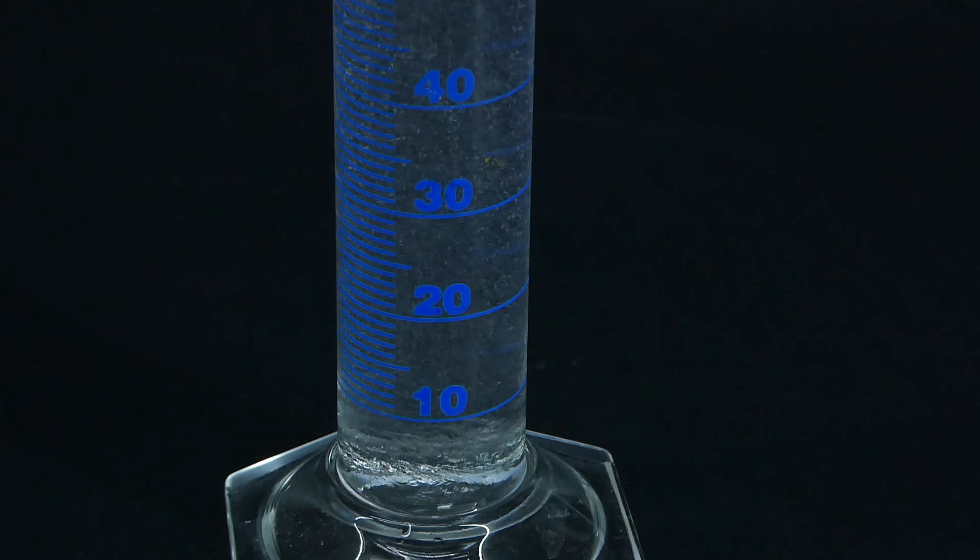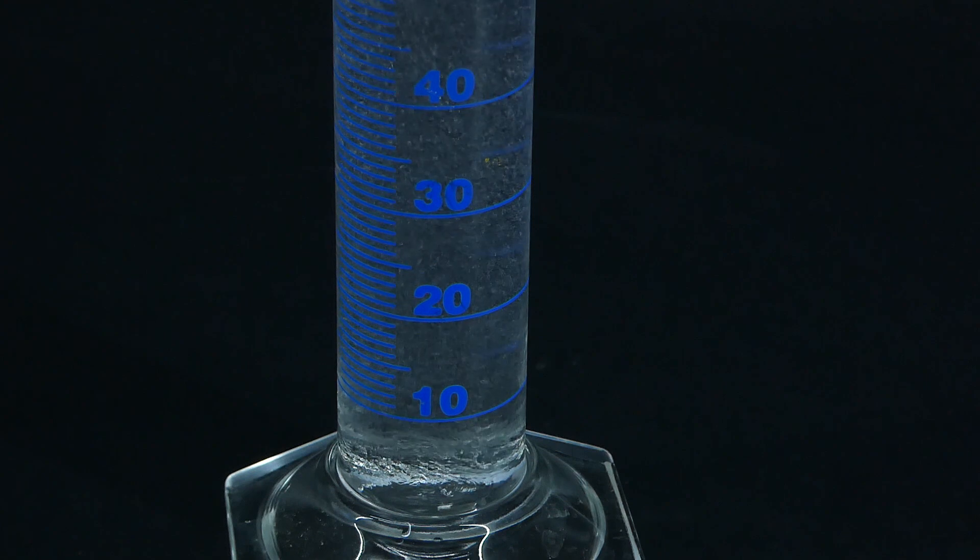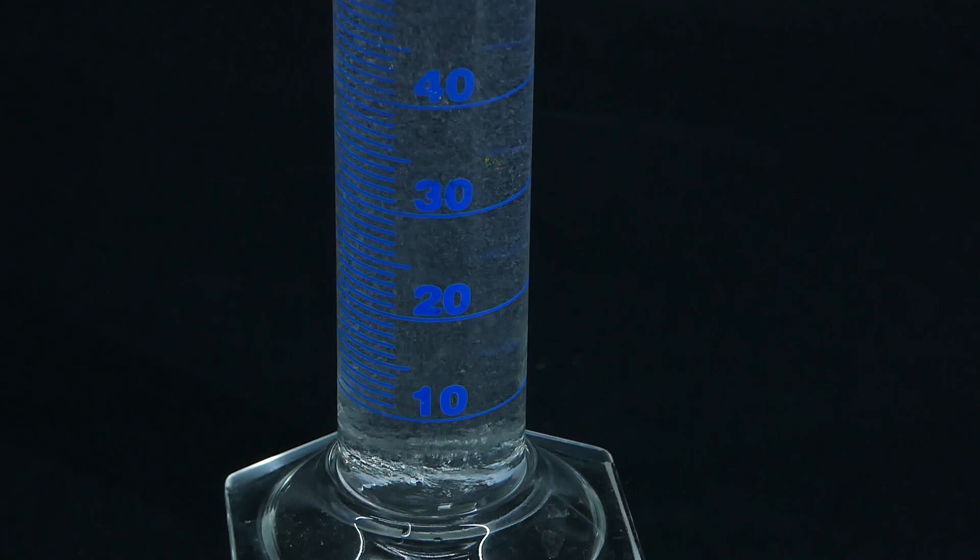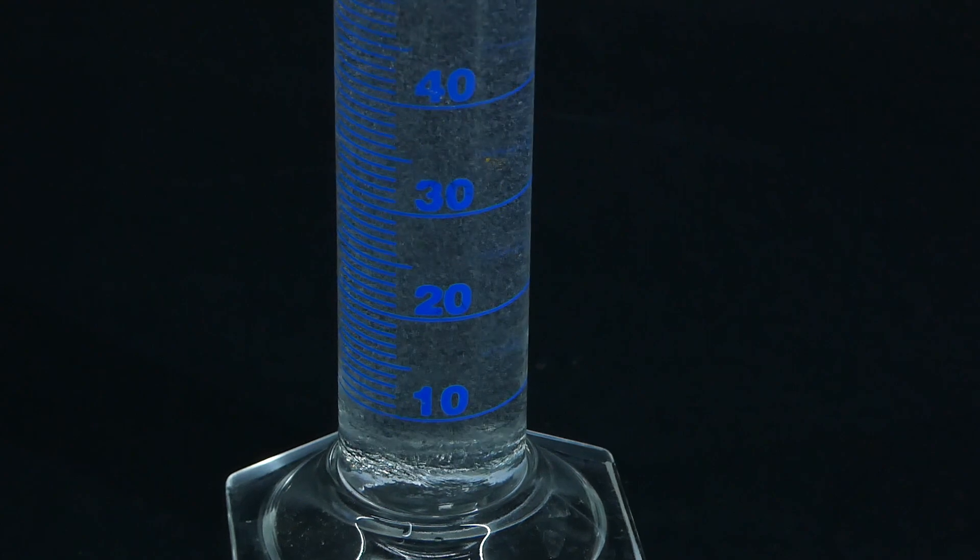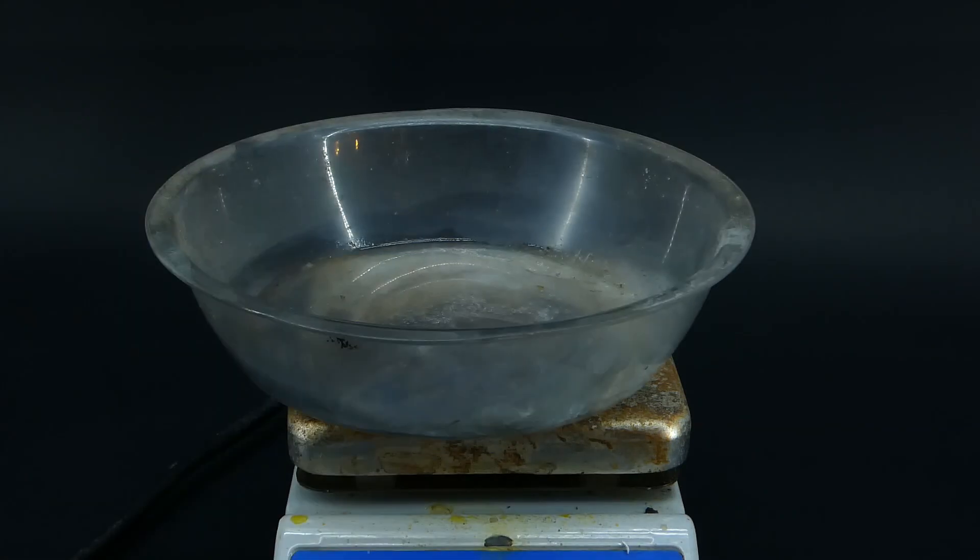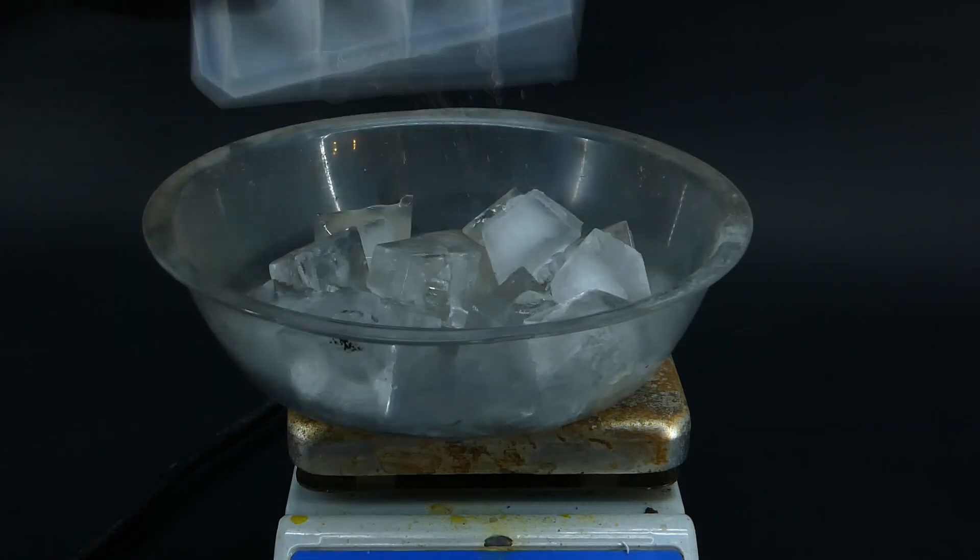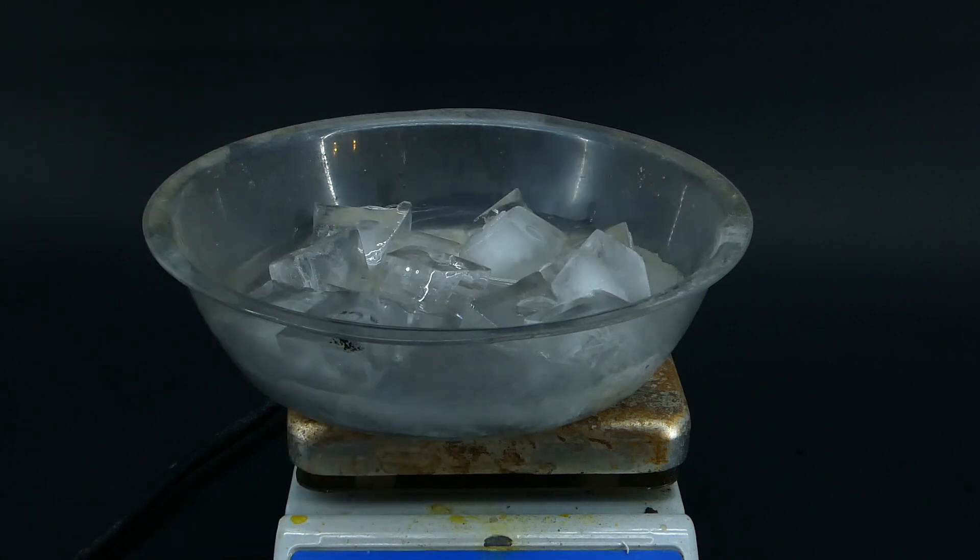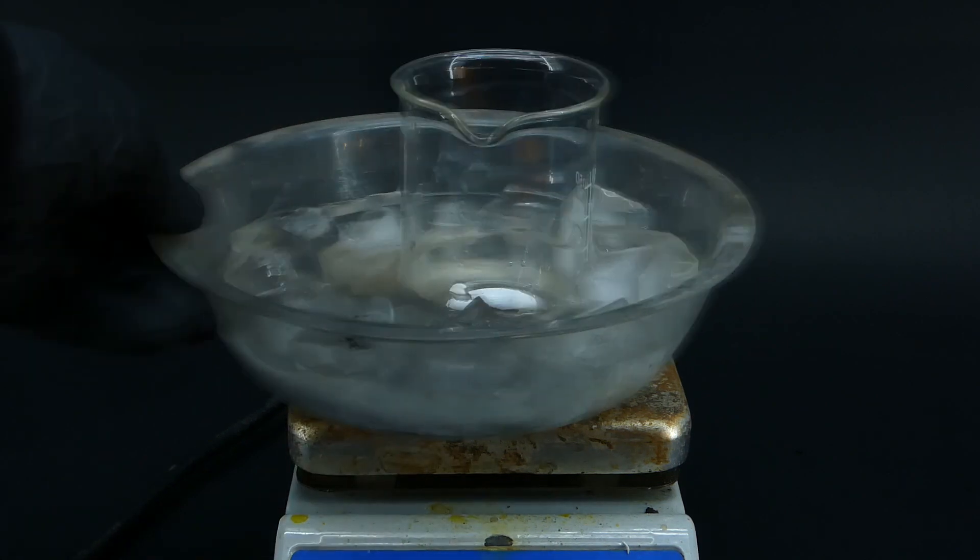Also guys, never pour water directly into concentrated acid, and instead do it the other way around. Here it is not a problem, since the hydrochloric acid is already a 34% solution in water. After combining the ingredients, I poured them into a beaker in an ice bath with stirring. The ice bath and stirring are not necessary, but again, the reaction works much better with them.